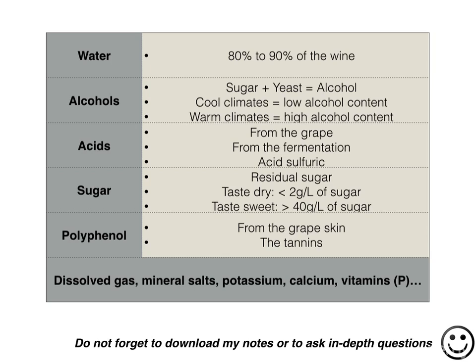The polyphenols contained in the grape skin play a major role in determining the character of a wine, especially red wines. They can be color pigments or even tannins, which give an astringent taste — a sensation very similar to what happens when drinking stewed tea. The tannins give structure and backbone to the wine, and we will talk a lot about them throughout this course.